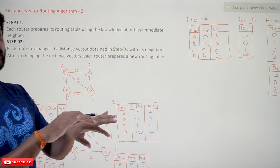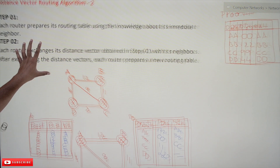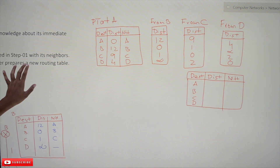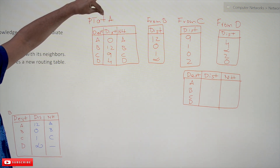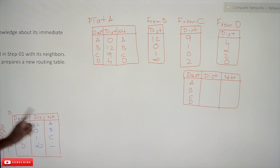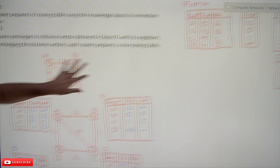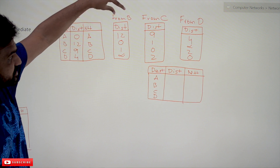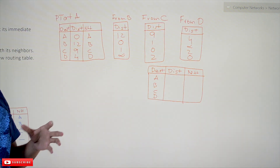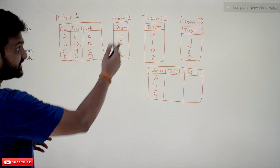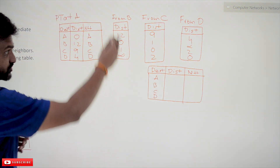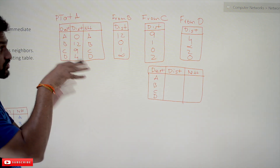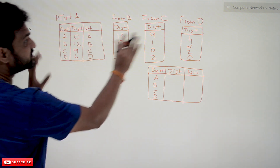Once the exchanges are done, this is the part we will try to understand. This is the previous routing table at A, and these are the distance vectors received from its immediate neighbors B, C, and D — the distances that were obtained in the previous step. Those values are now available at A.